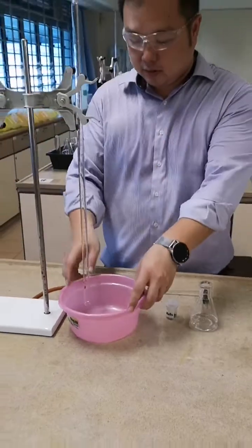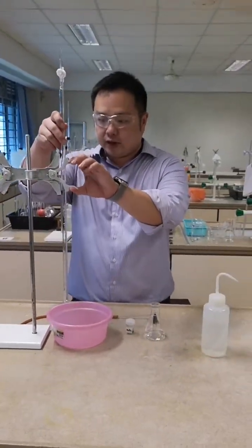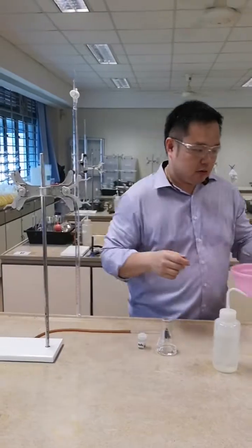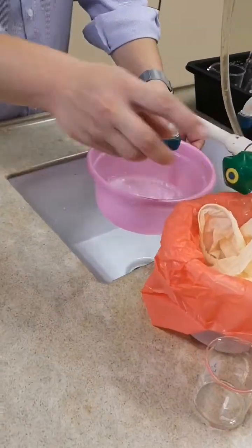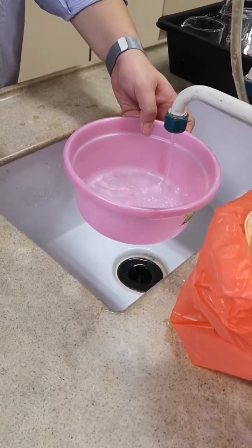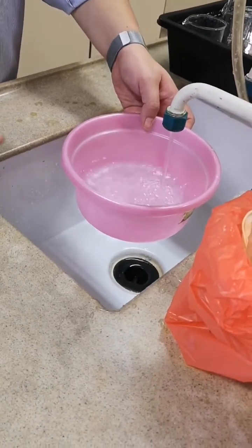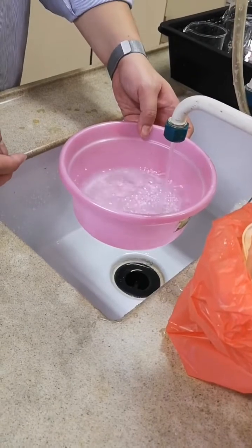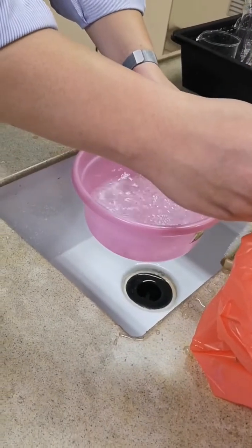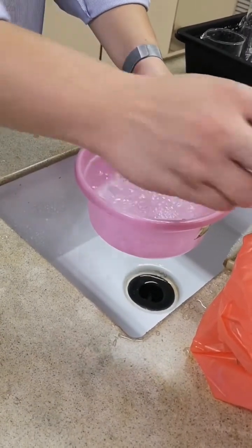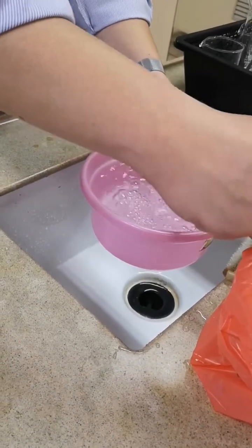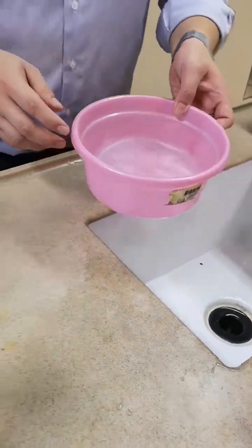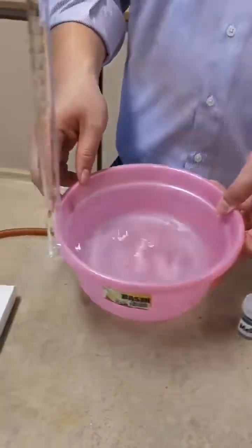To collect oxygen gas over water, first fill up the water trough with water, roughly to the mark on the tub. Please take note it cannot be too full because you do not want water to spill out from the tub.